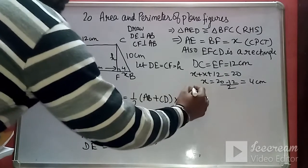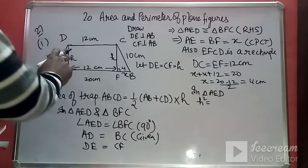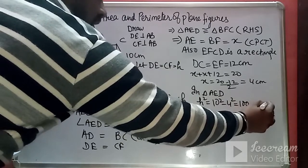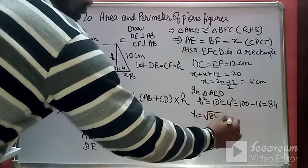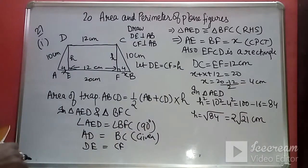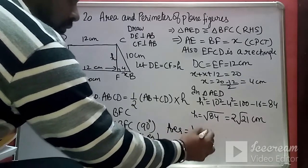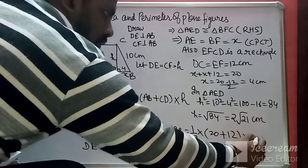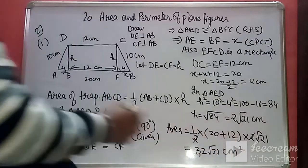Now we will use the Pythagoras theorem in triangle AED. H squared equals 10 squared minus 4 squared, that is 100 minus 16, which is 84. So H equals the square root of 84, which simplifies to 2 root 21 cm. Now the area equals half into (AB plus CD) into height, that is half into (20 plus 12) into 2 root 21, giving us 32 root 21 cm squared.